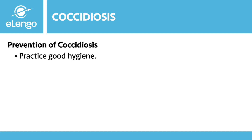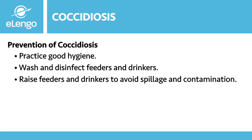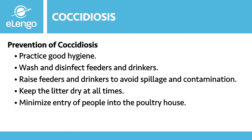How do we prevent coccidiosis from affecting our birds? Prevention is through good hygiene practices that will help keep the disease pressure at its lowest. Wash and disinfect feeders and drinkers every day. Raise feeders and drinkers to avoid spillage and contamination. Keep litter dry always, especially around the drinkers, and do not allow overflow of water.